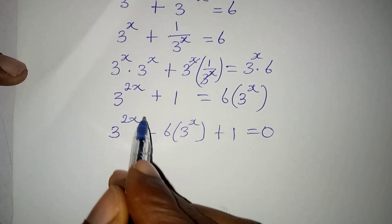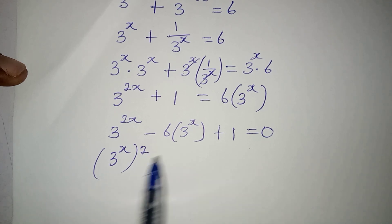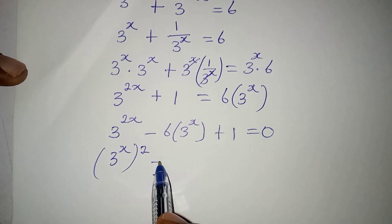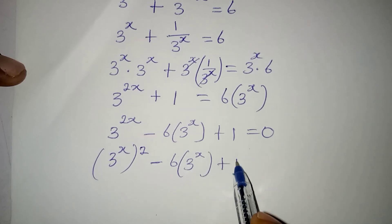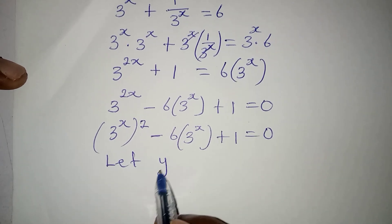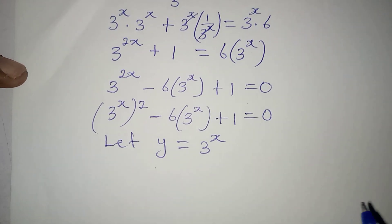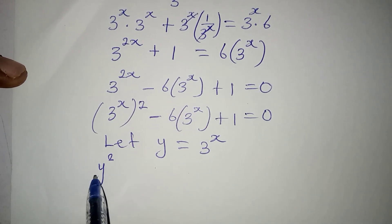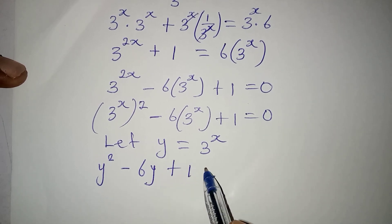Remember that I can still work on this, so I have 3 to the power of x, to the power of 2. Because I'm having 3 to the power of x in this place. So: 3 to the power of x squared, minus 6 into bracket 3 to the power of x, plus 1 equal to 0. Now let y be equal to 3 to the power of x. Wherever we have 3 to the power of x, we write y. So we have y squared minus 6y plus 1 equals 0.